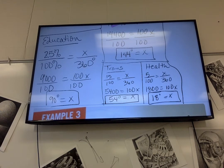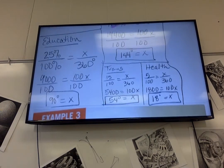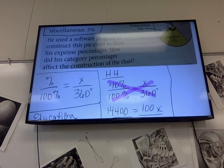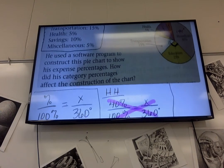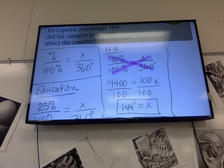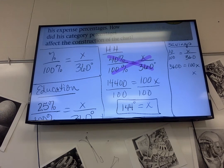We expect that this will be something on our next test that you'd be expected to do. You wouldn't have to draw them out, you'd just have to find them. Savings is 10%. You get 36.